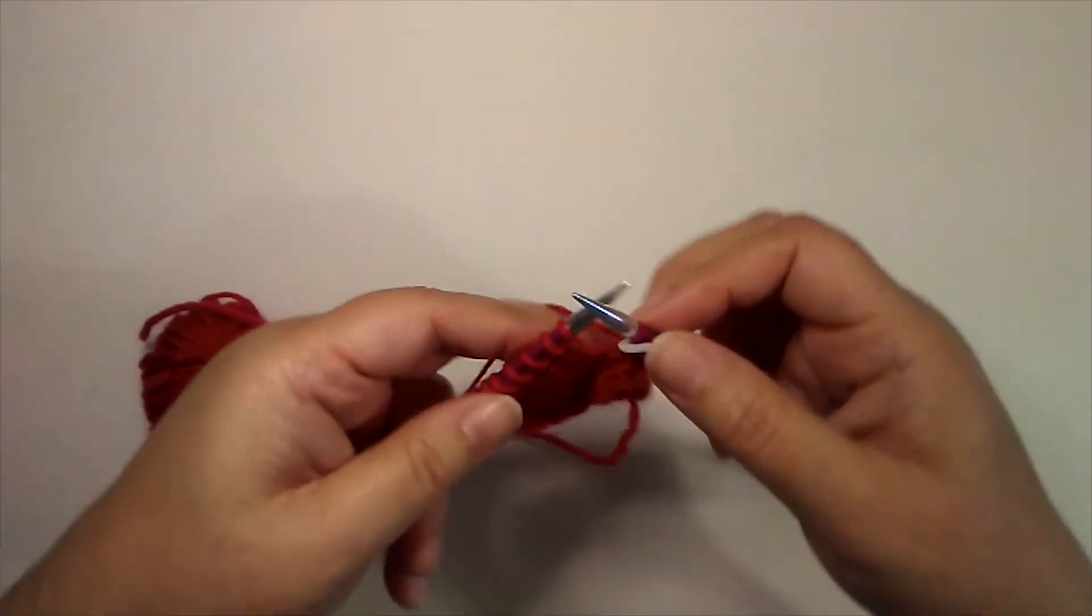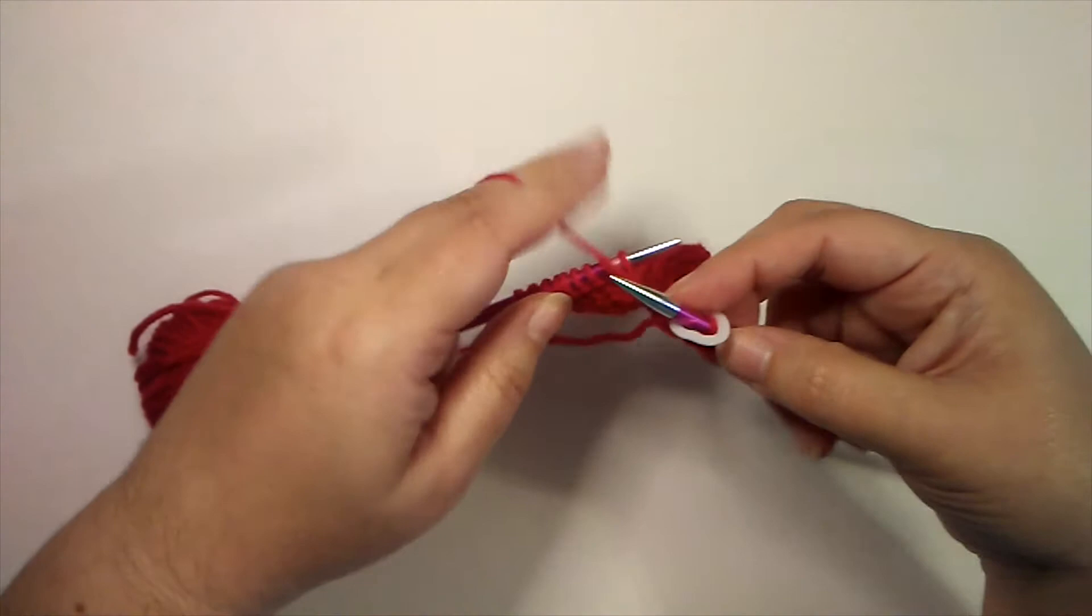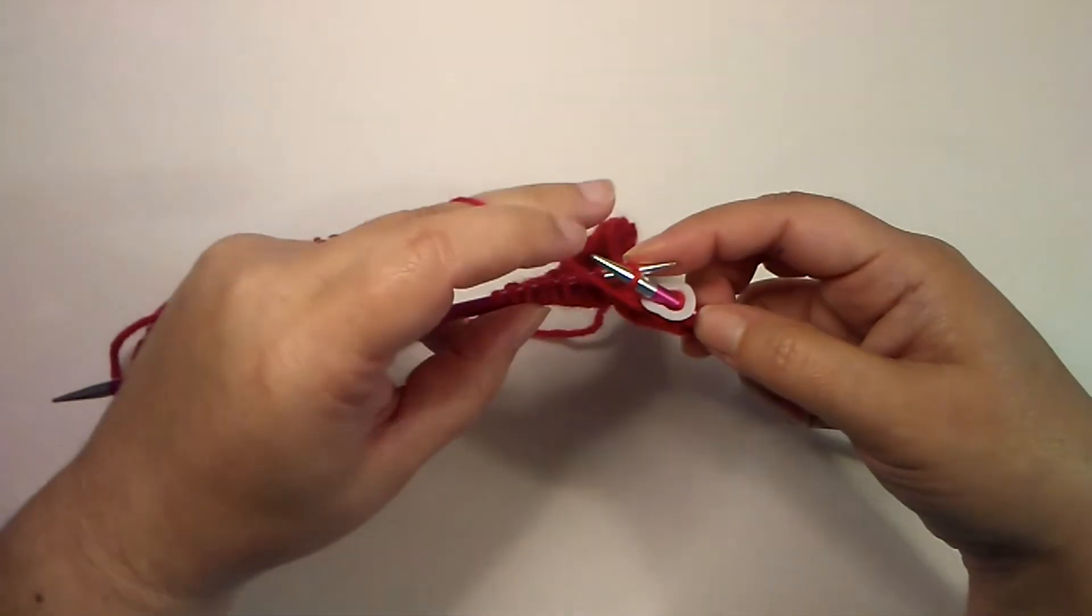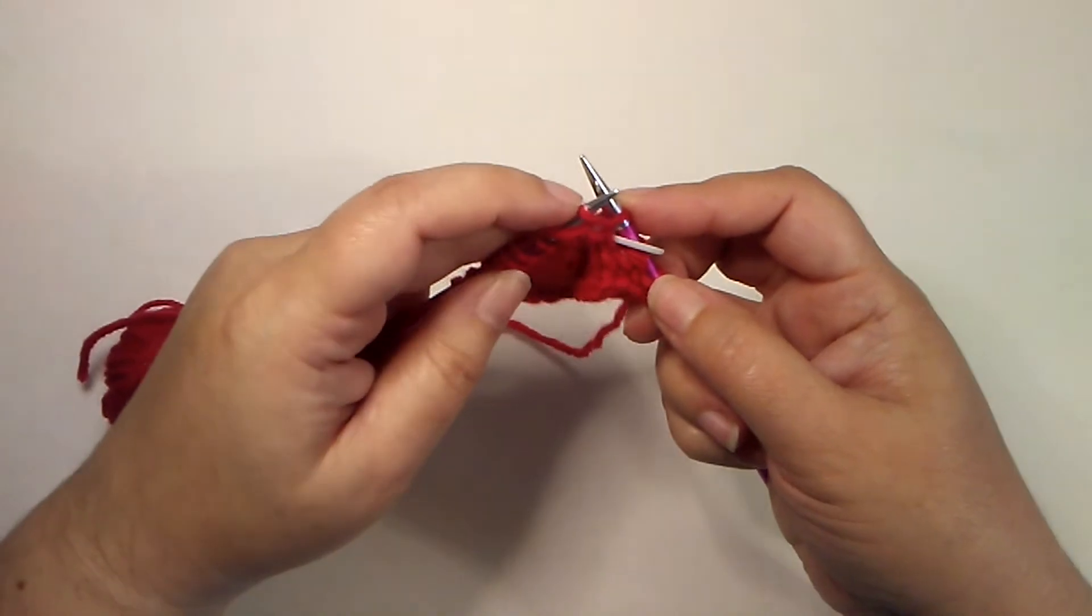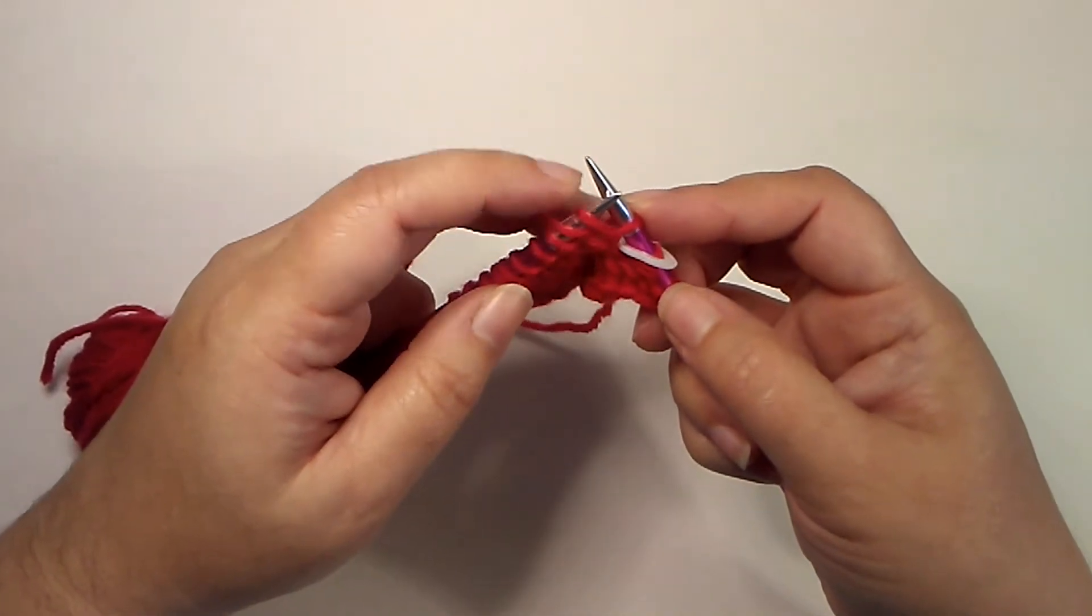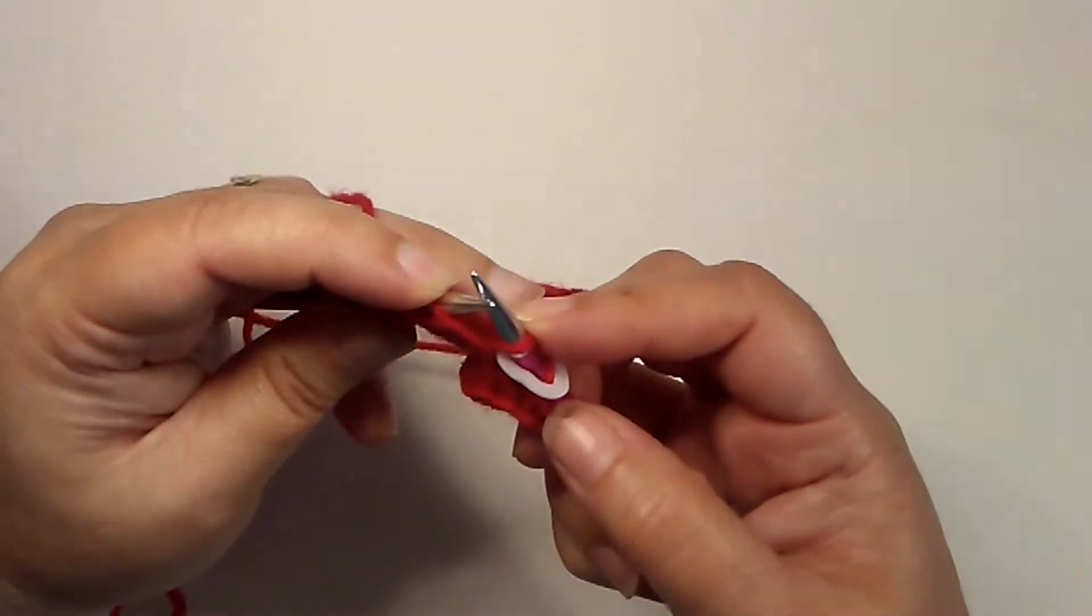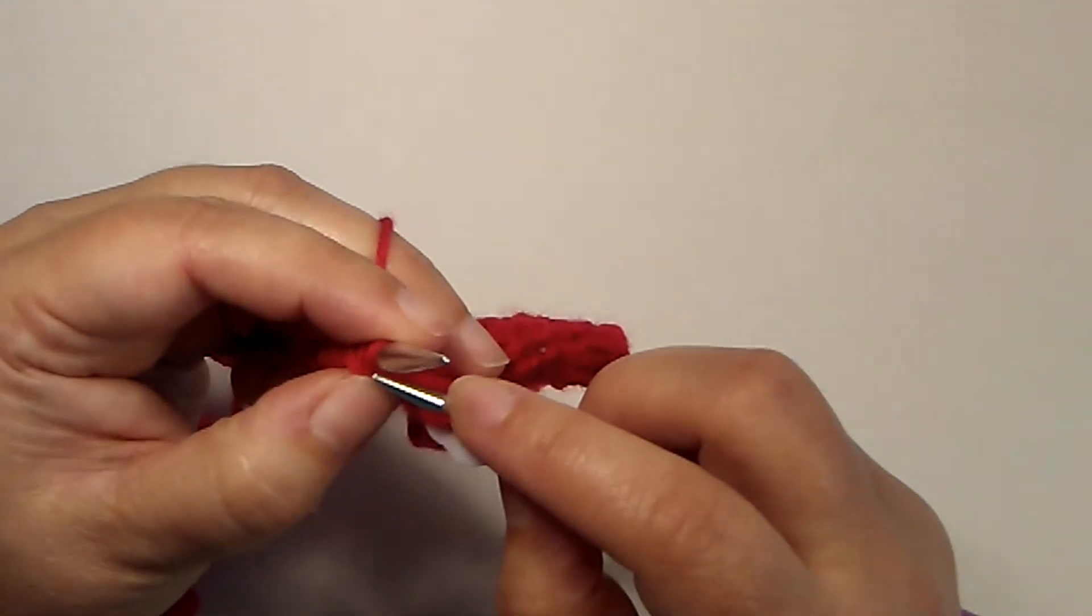I'm going to work it right in this stitch. To purl front and back, we start by purling—insert, wrap—we purled that stitch, but I'm not going to drop this stitch from the needle. Instead, I'm going to purl it through the back loop, so I'm going to turn my work.